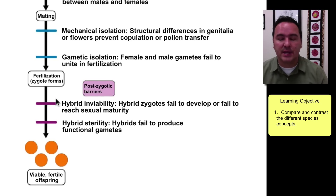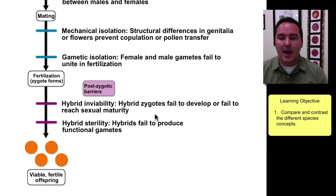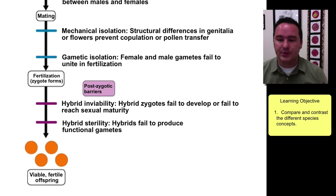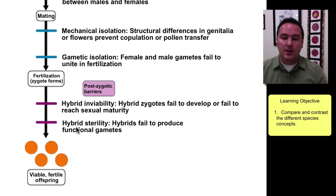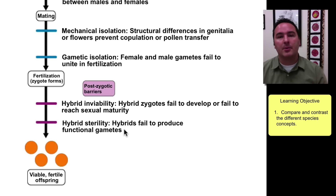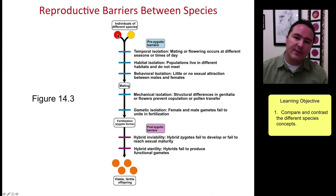If you get through those first five barriers and have a successful fertilization, that still doesn't mean they are the same species. You could have hybrid inviability, where hybrid zygotes fail to develop — resulting in things like early miscarriages or the organism never reaching sexual maturity. Likewise, you could have hybrid sterility, where the offspring does live but hybrids fail to produce functional gametes.